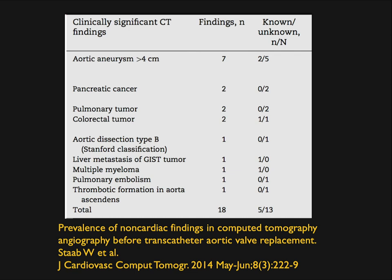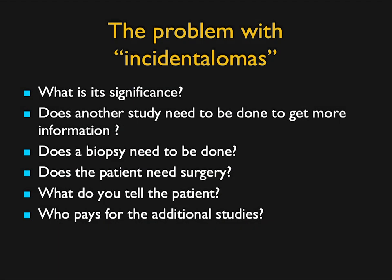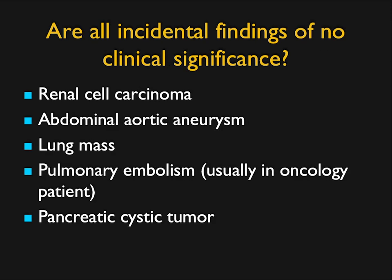This brings us back to the management question. Sometimes you see a renal mass that's clearly cancer — that's easy, you send to the urologist who decides between nephrectomy, partial nephrectomy, or active surveillance for smaller tumors. But for an indeterminate liver lesion, what do you do? Do you need MRI? A biopsy? Surgery? What do you tell the patient, and who pays for it? Most incidental findings are not going to be important, but 7% to 17% will be — including renal cell carcinoma, aneurysms, lung tumors, PEs, or pancreatic cystic lesions.